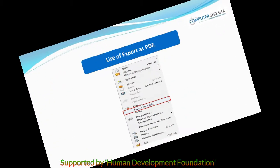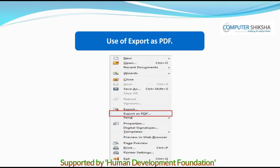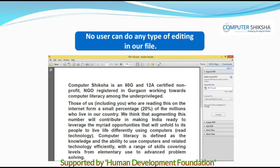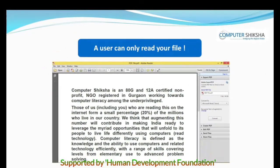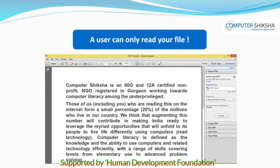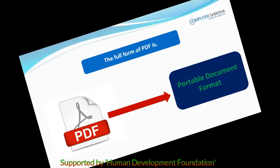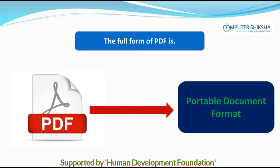With the option of Export as PDF, we can change our Writer file into a PDF file, which makes our file safe. No user can do any editing on our file, which means that no one can make changes to your file. A user can only read your file. The full form of PDF is Portable Document Format.